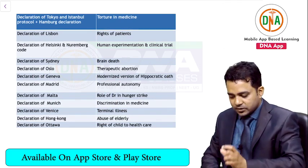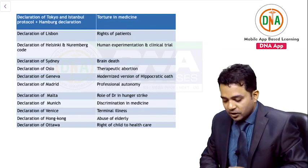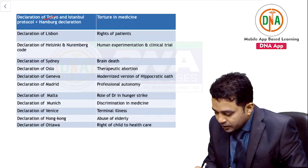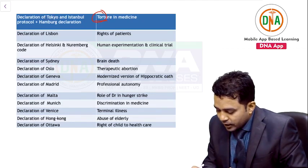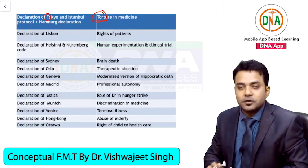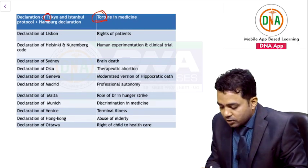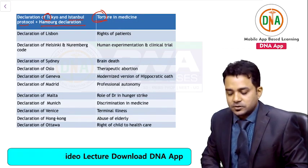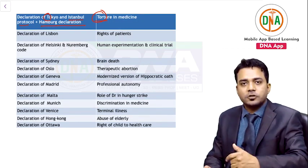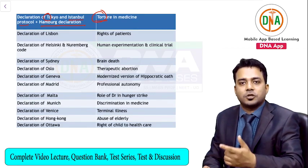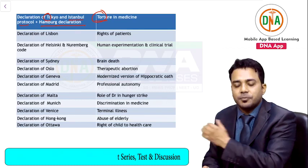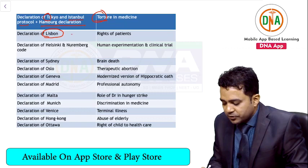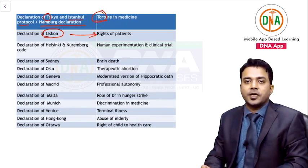Let us discuss all declarations in one place. Starting with the Declaration of Tokyo — remember T for Tokyo and T for torture. The Declaration of Tokyo, Istanbul Protocol, and Hamburg Declaration are all related to torture deaths, and a doctor should not adopt any means of torture when treating a patient.